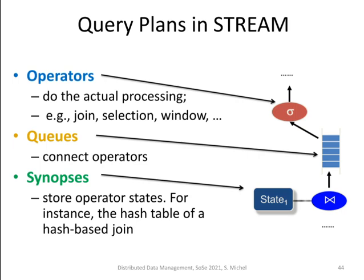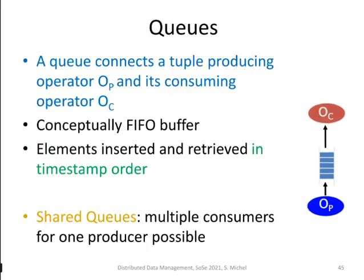Operators have queues and states associated with them — for instance, carrying synopsis data such as a hash table for hash-based joins. Queues organize communication between producer and consumer operators. Conceptually a queue is simply a FIFO buffer: tuples are inserted and retrieved in timestamp order, and you can have multiple consumers reading from the same queue.